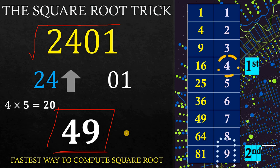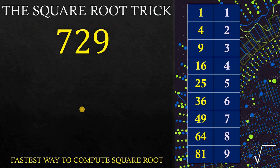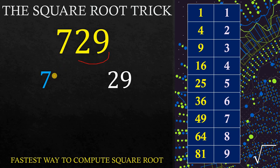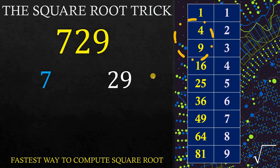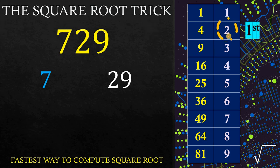Now how about the next example: 729. Again, divide the digits by 2s from right to left. This gives us 7 and 29. It doesn't matter if we have 1 digit here and 2 digits there — the important thing is we divide the number by 2s from right to left. Now, 7 is between 4 and 9. Again, let's choose the smaller digit which corresponds to 2. So 2 is our first digit.